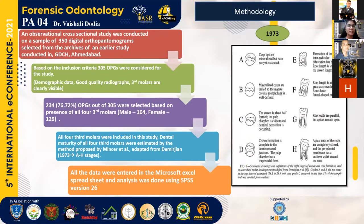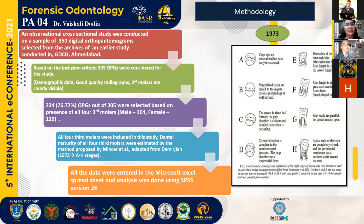In the methodology, 350 digital orthopantomograms were selected from the archives of earlier studies done at GDCHM, based on inclusion criteria such as availability of demographic data, good quality radiographs, and clearly visible third molars. Out of 305 OPGs, 233 were selected based on the presence of all four third molars. All third molars were then graded according to Demirjian's 1973 A-to-H stages.